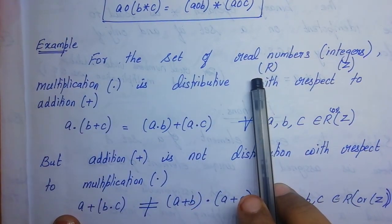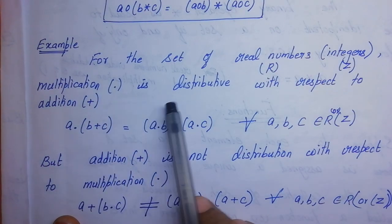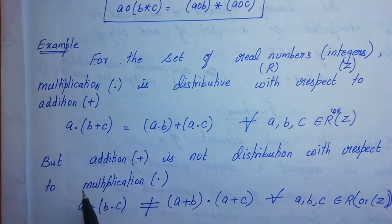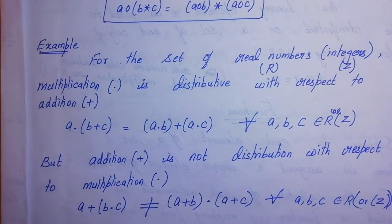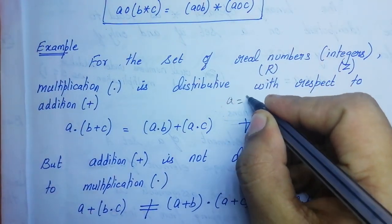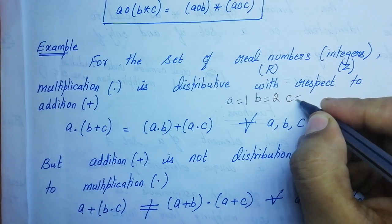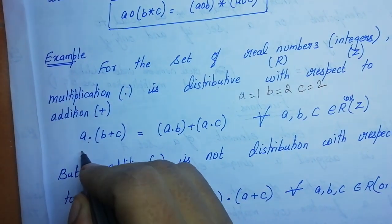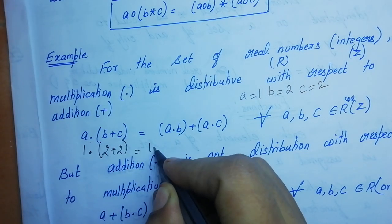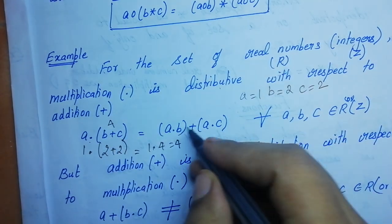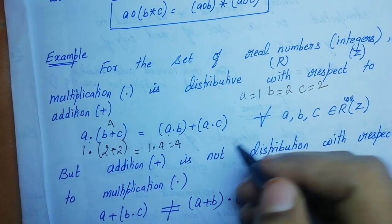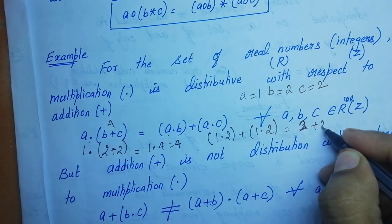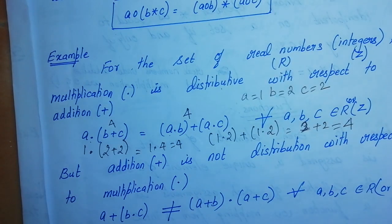We are going to take the set of all real numbers. Multiplication is distributive with respect to addition. To prove this, take a=1, b=2, c=2. Then A dot (B + C) = 1 dot (2+2) = 1 dot 4 = 4. And (A dot B) + (A dot C) = (1 dot 2) + (1 dot 2) = 2 + 2 = 4. LHS equals RHS.